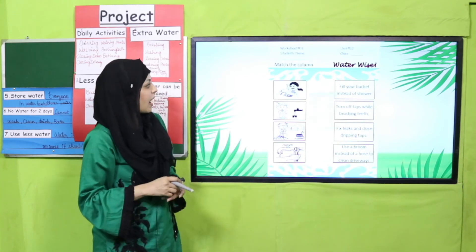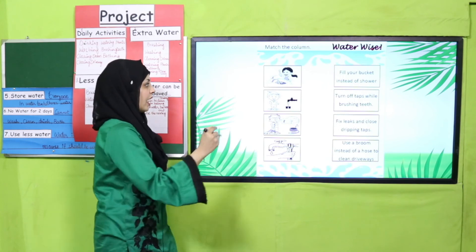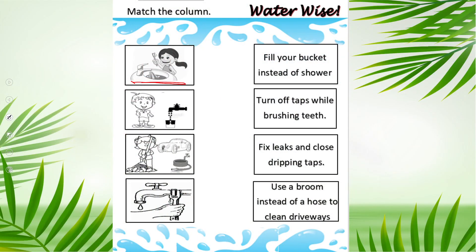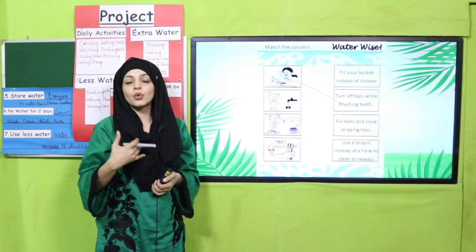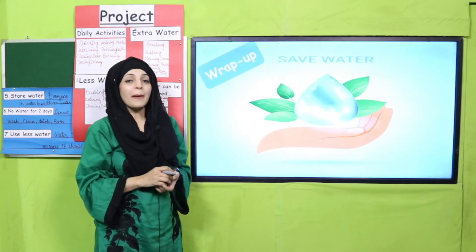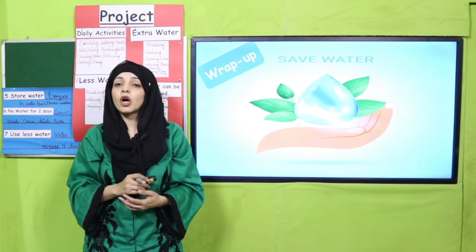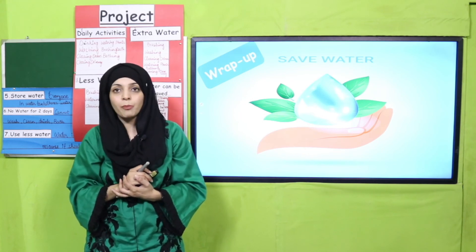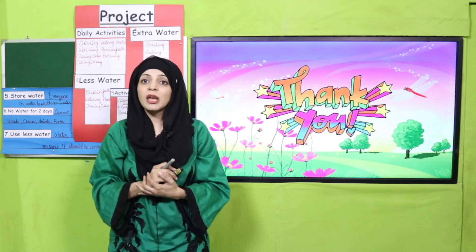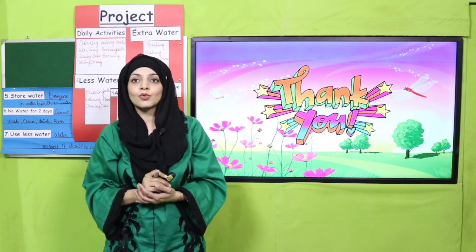For the worksheet, match the column — 'Water Wise'. Let me do the first one: in the picture the girl is brushing her teeth, so we match it with 'turn off the taps while brushing teeth.' That is the correct option. The wrap-up of the lesson: save water — we have done the project on saving water, the importance of water as a limited and valuable resource. Keep everybody around you safe, save water and natural resources, do not waste them. Thank you so much, Allah Hafiz.